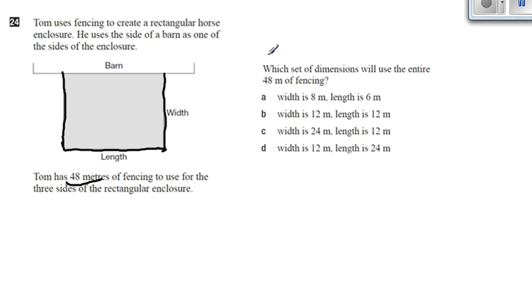We need to figure out which set of dimensions will use the entire 48 meters. For example in A, if the width is 8 and the length is 6, then 8 plus 6 plus 8 is only 22 meters, not 48.